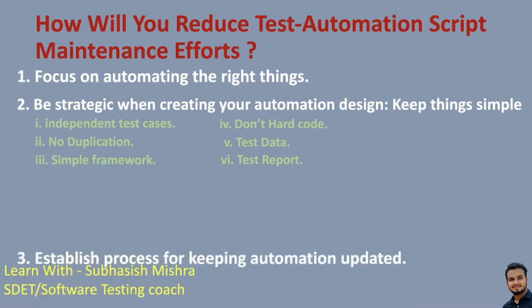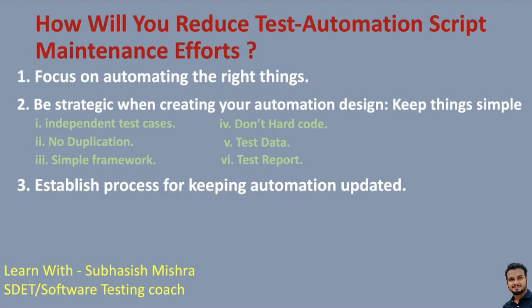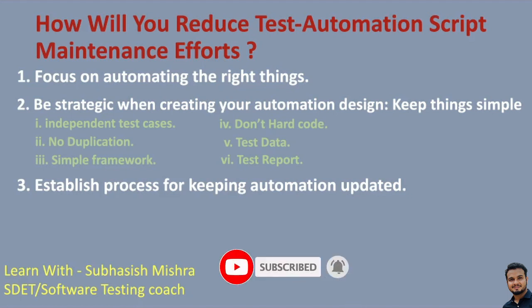The next point is to establish a process for keeping automation updated. We have always seen people just write automation test cases and then don't update them regularly. As a result, when they actually want to execute them, they find a lot of failures and it is difficult to fix all of them at that point. They put them into the backlog and never fix them. Try to build a process where your automation test cases execute every day, people review the results, and any failures are analyzed and fixed as soon as possible. You can also implement a peer review process before checking in automation code to avoid flaky test cases.